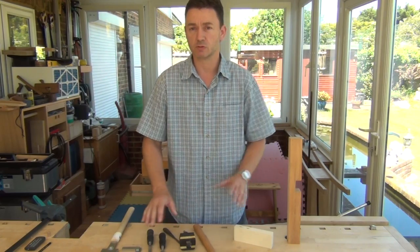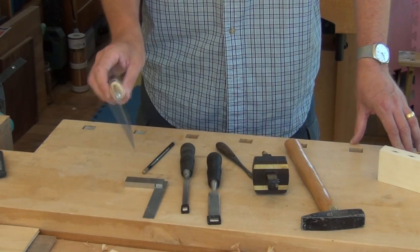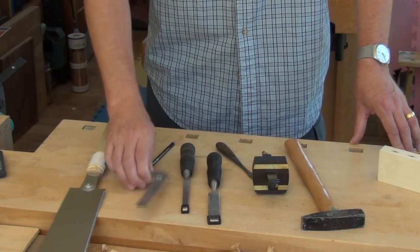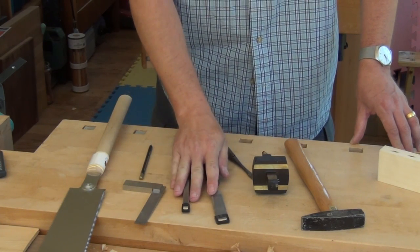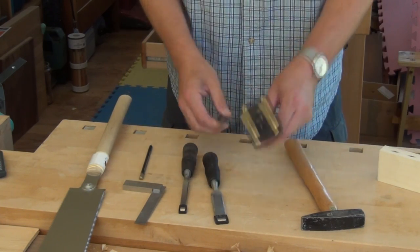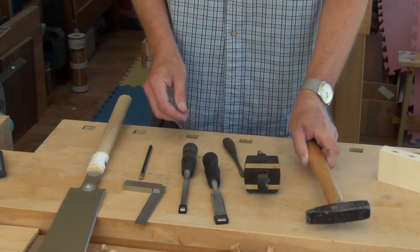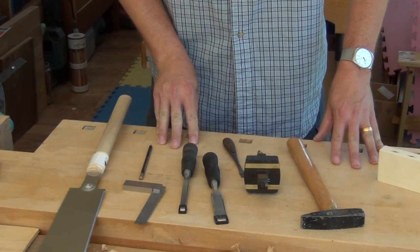I've also laid out the tools which I think I'm going to be using. I've got a cross cut and a rip cut Japanese style saw, an engineer's tri-square, a pencil, a couple of chisels, a mortise gauge and a screwdriver to adjust it and a hammer. And of course we're working at a woodworking bench.